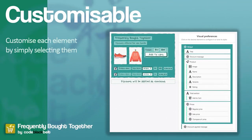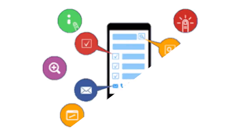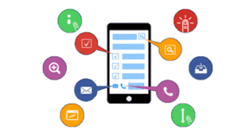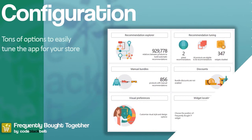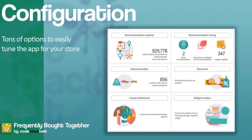The app also offers manual recommendations depending on your own product bundles, and will show random products when there is not enough data for automatic recommendations. That data can be filtered by collection, product type, or product vendor to display similar products. The bundle discount upsell feature is particularly strong — an automatic discount can be applied to bundles either globally or individually, effectively using the app as a discount upselling widget. Pricing is shown on the screen.